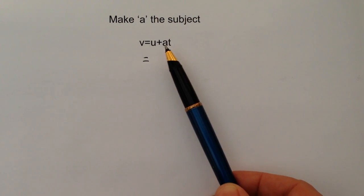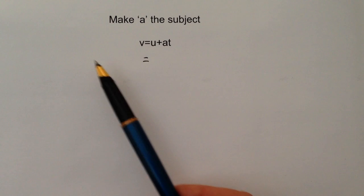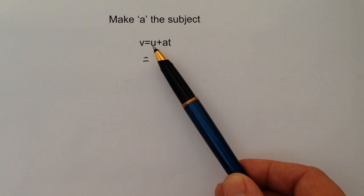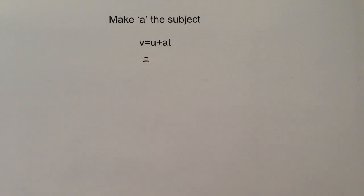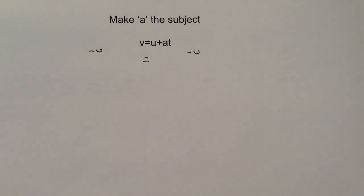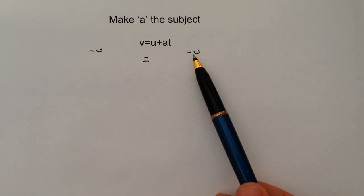And what I ideally want is that 'a' is on its own on one side and everything else is on the other side of the formula. So the first thing I'm going to do is get rid of this u. Now the easiest way to get rid of it is to minus u. But because I have to minus u from the right hand side, I also have to minus u from the left hand side. What that means is I've got u minus u, so effectively those two cancel themselves out and I lose it completely.